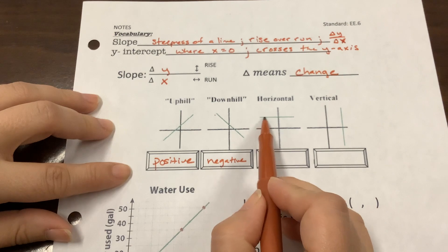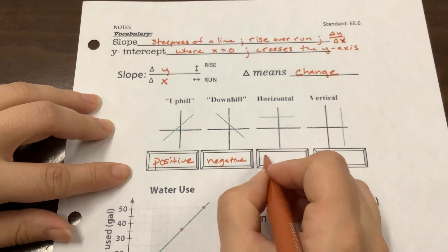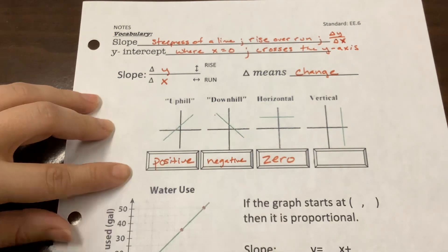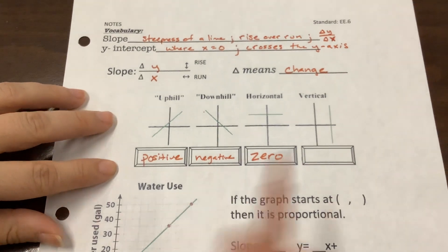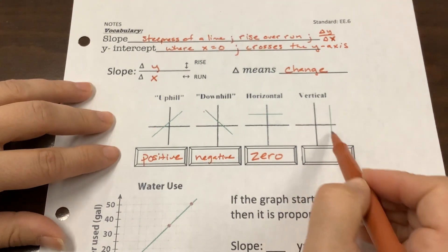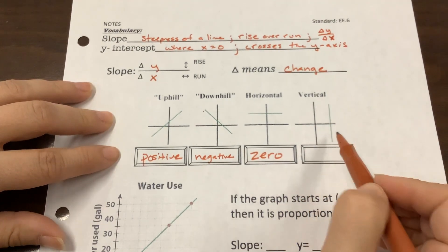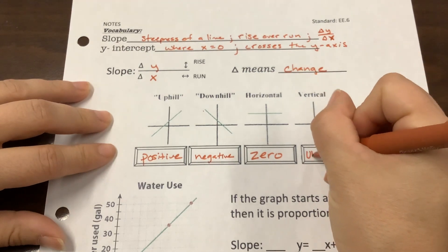This one is neither increasing nor decreasing, so it's what we call 0. And finally, this vertical line that goes straight up and down, there's another number to represent it, so we call it undefined.